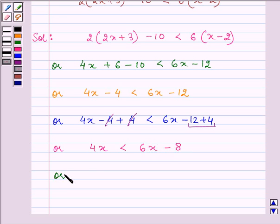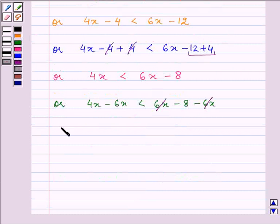Now on subtracting 6x from both sides we simplify it further, and hence minus 2x is less than minus 8. Multiplying both sides by minus 1 we have 2x is greater than 8 now.